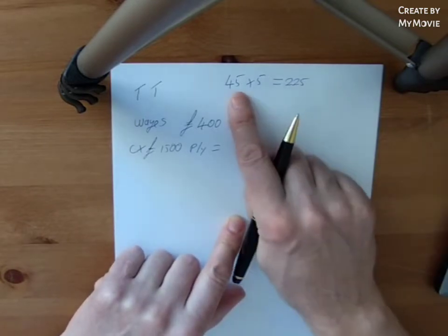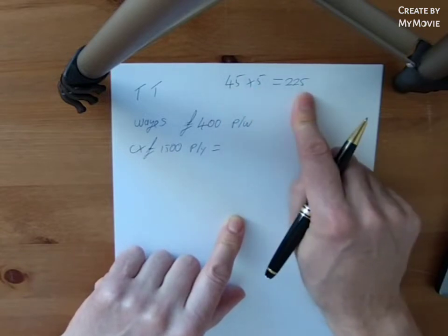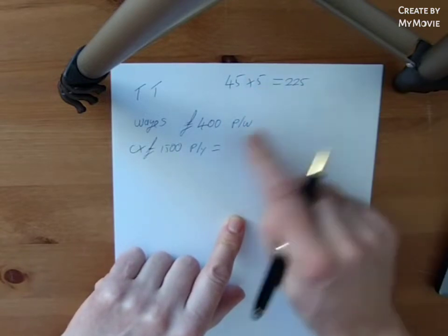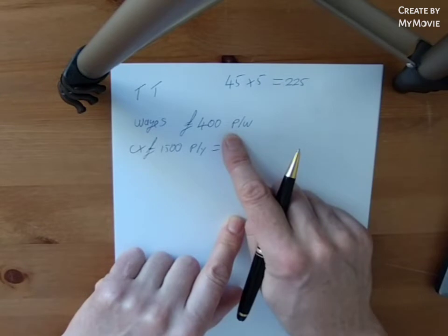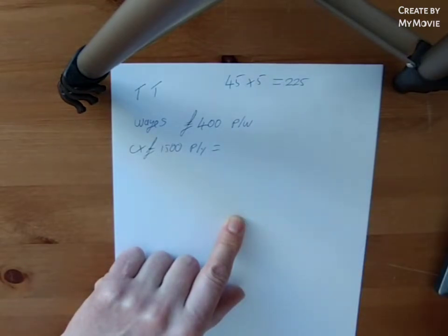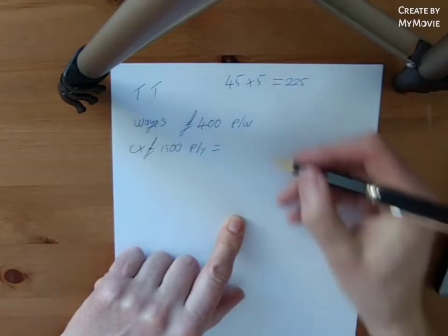Now, if you want to work for 46, 47, 48, whatever weeks, that calculation stays the same. So we're paying ourselves £400 a week, five days in a week. That's £80 a day.